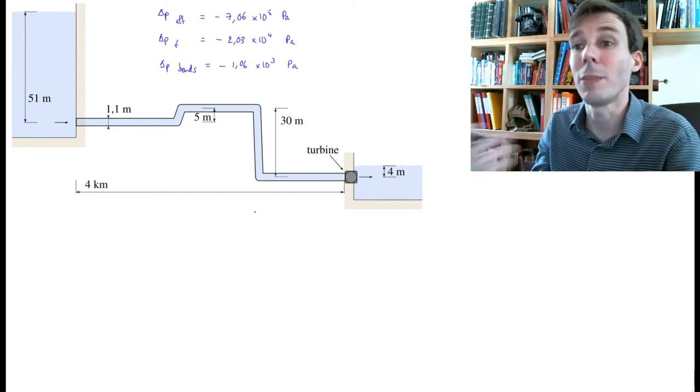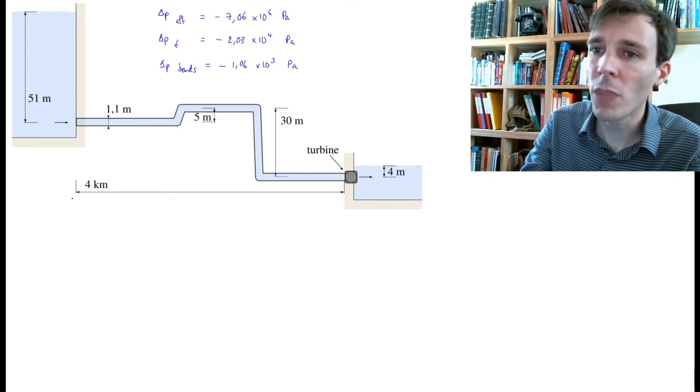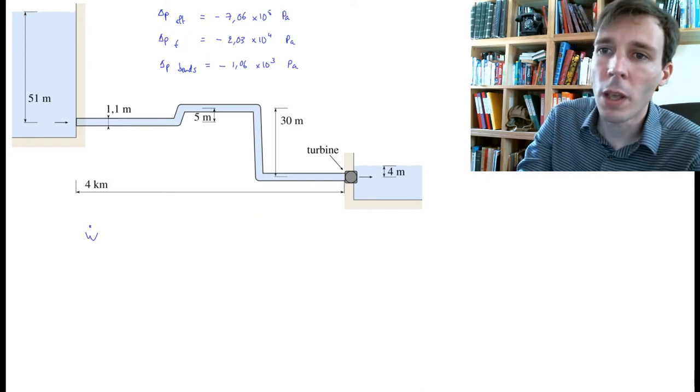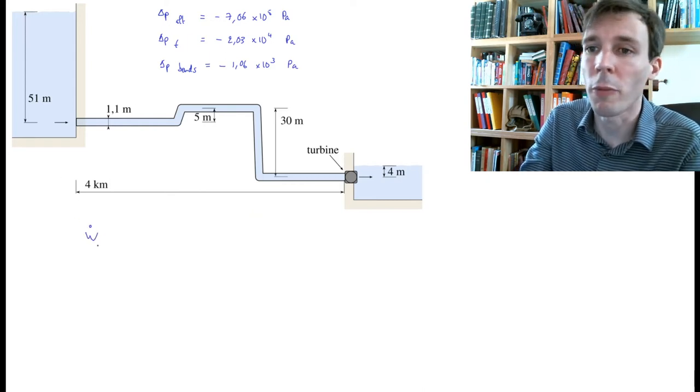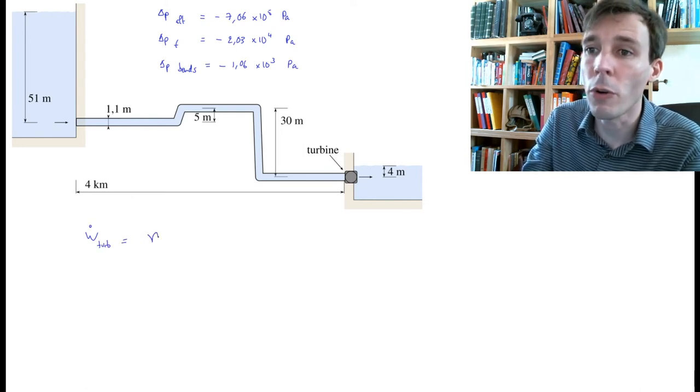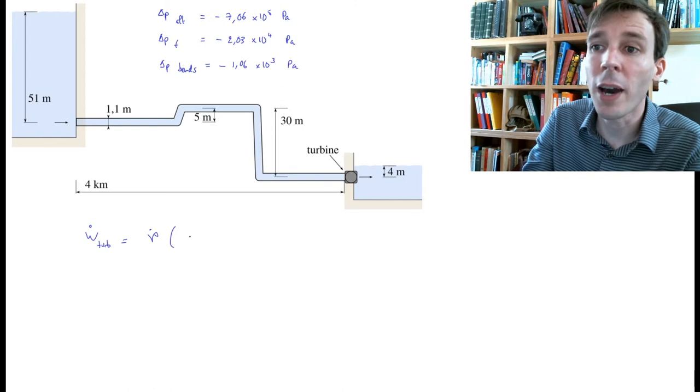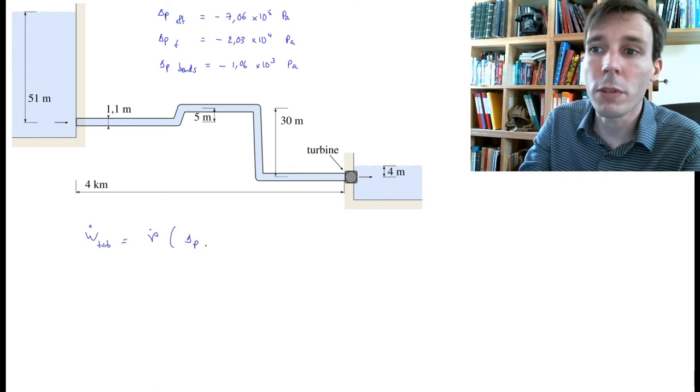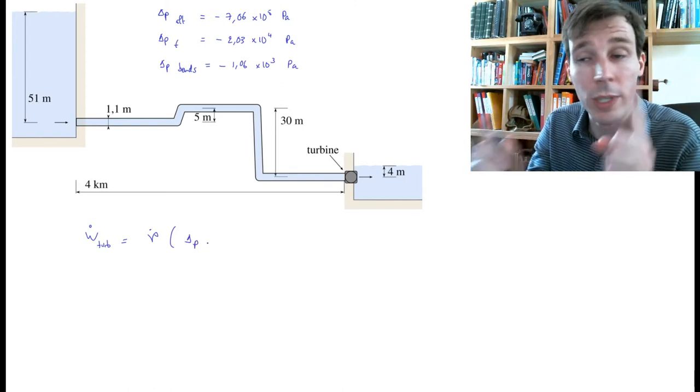Well, the power that's made available to the turbine is the volume flow multiplied by the delta P that occurs at the turbine between the two sides of the turbine, so delta P turbine.